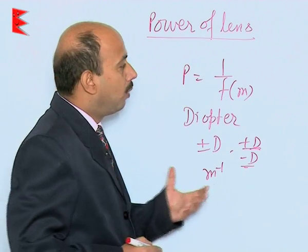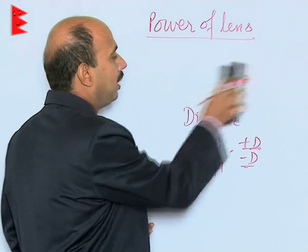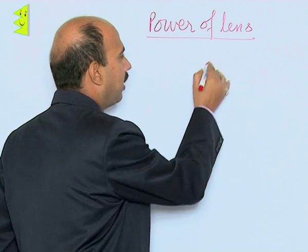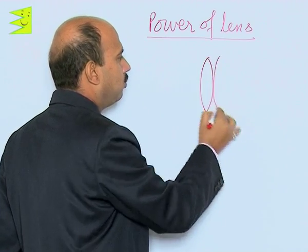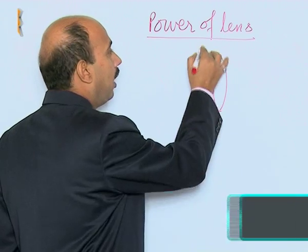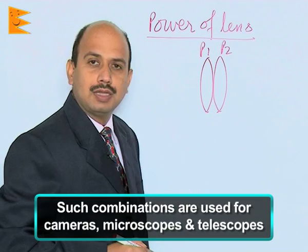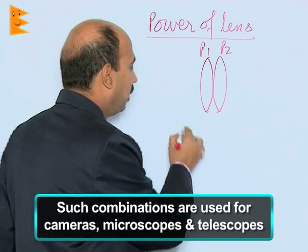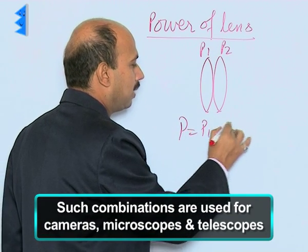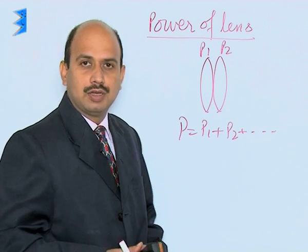Now, if you have two or more lenses together — suppose you take a combination of lenses placed in contact having powers P1 and P2 — the powers can be added algebraically. So the net power will be P1 + P2, and whatever number of lenses you have, you can keep adding. The total power can be obtained just by adding algebraically.